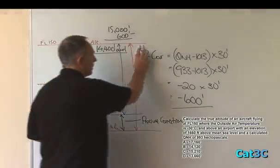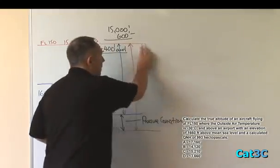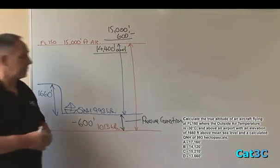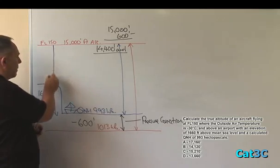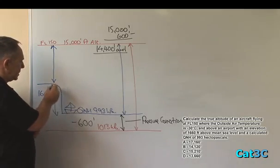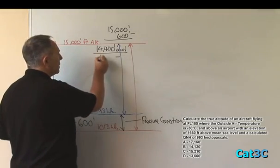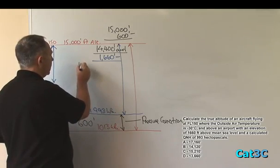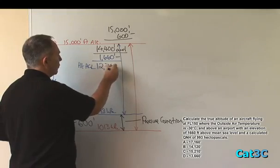Now, before I can convert the indicated altitude into a true altitude, what I need to do is to find out the height of the aircraft above ground level. And in order to do that, I simply subtract the elevation from the indicated altitude, which gives me a height above ground level of 12,740 feet.